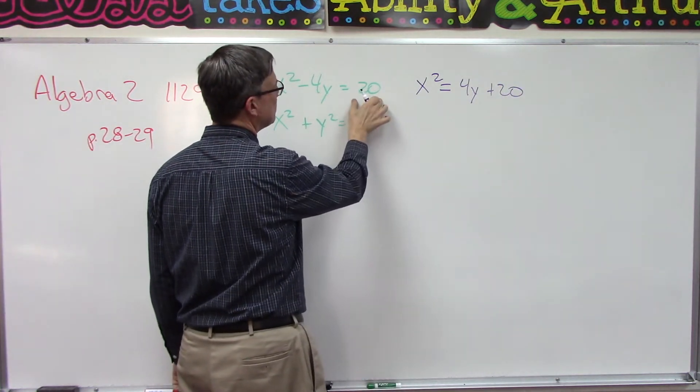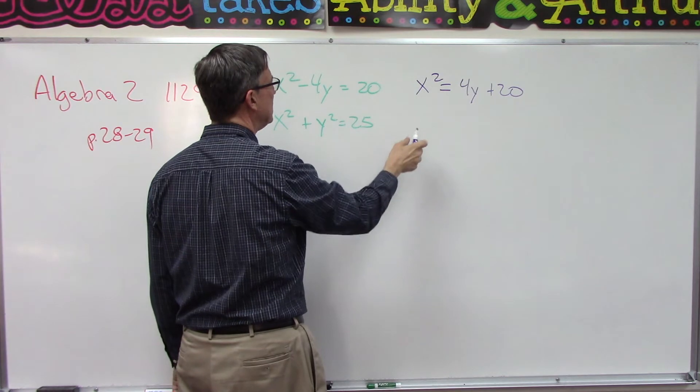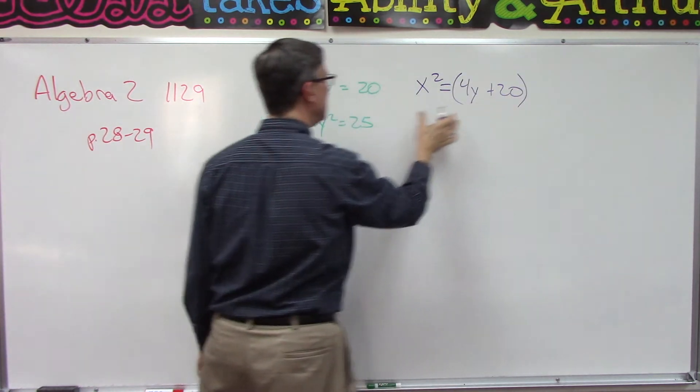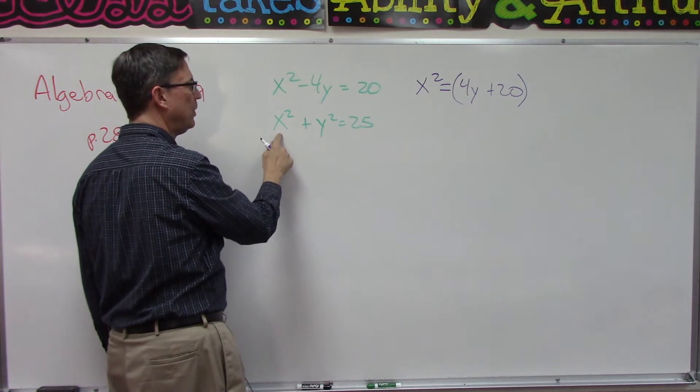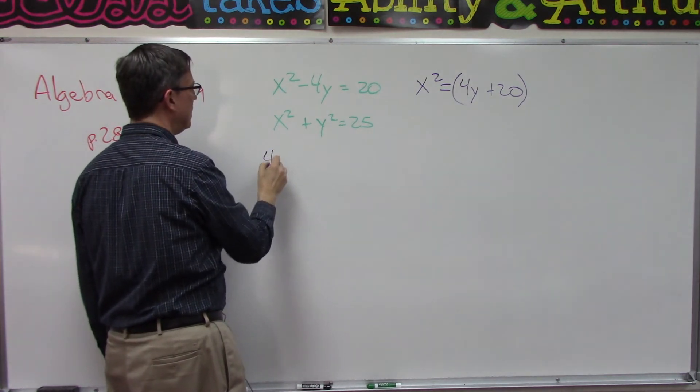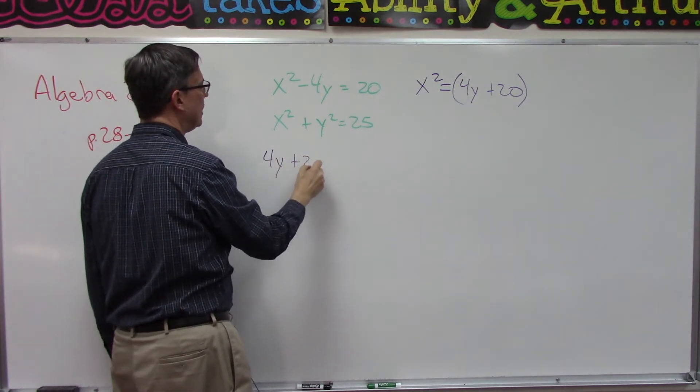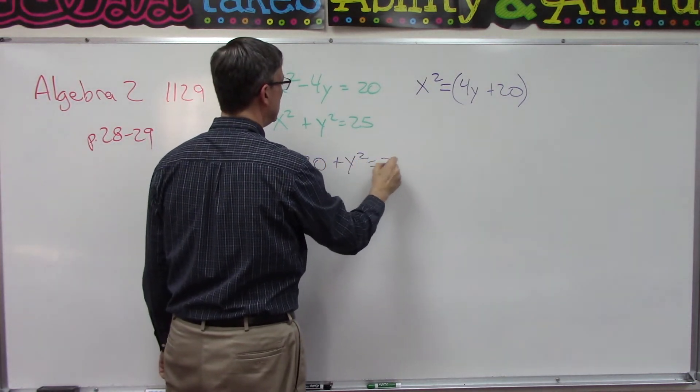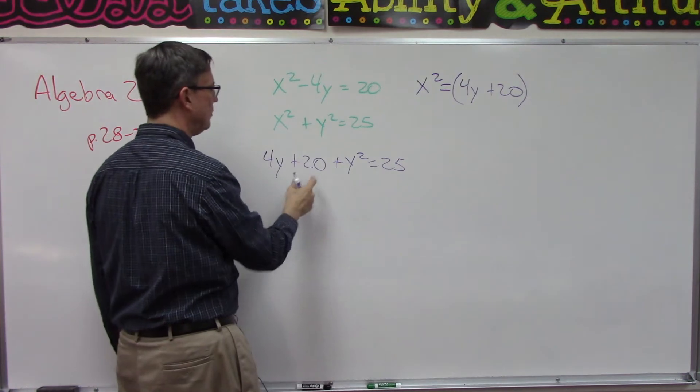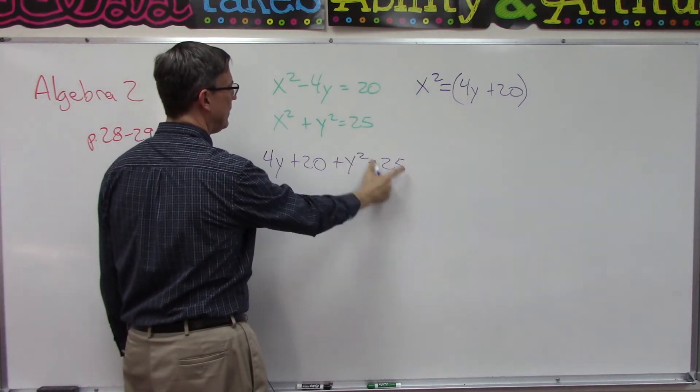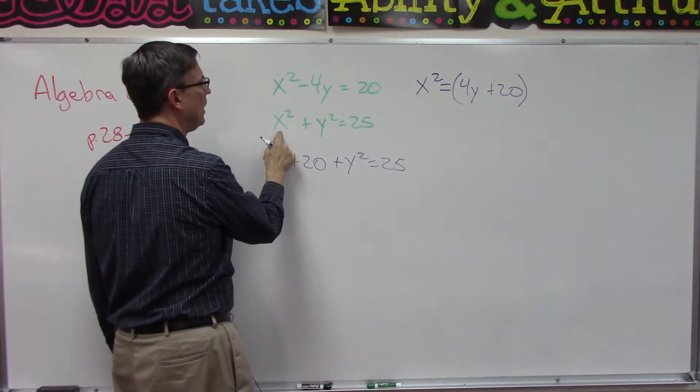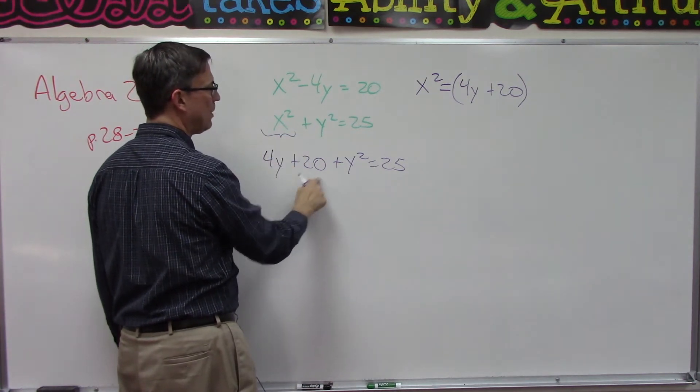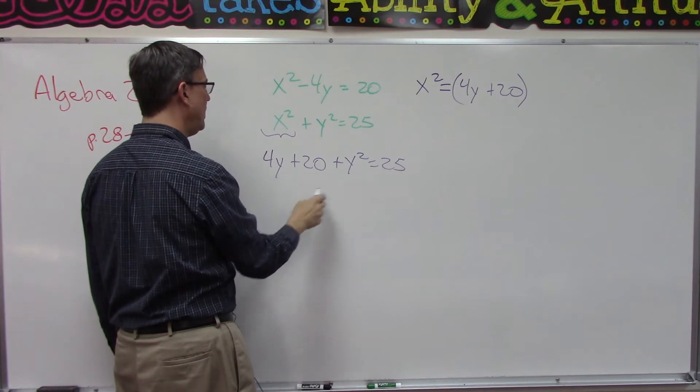So if I bring the 4y over to the other side I'll have x squared equals 4y plus 20. 4y comes over here becomes positive 4y plus the 20. Now I can substitute that in this equation in place of the x squared. So 4y plus 20 plus y squared equals 25.